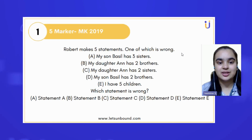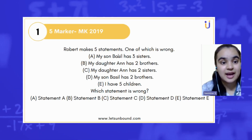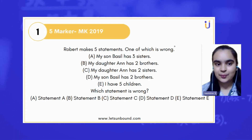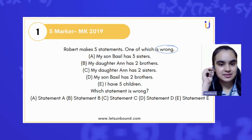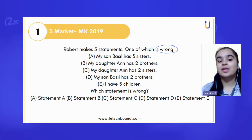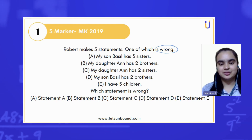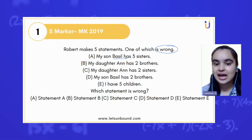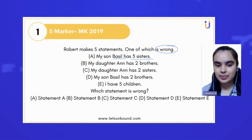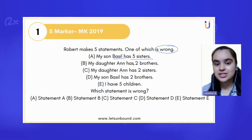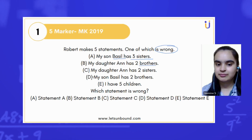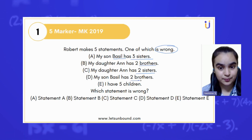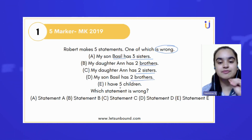Here is the question. Robert makes five statements, one of which is wrong. Let's look at the five statements. Statement one: my son Basil has three sisters. Statement two: my daughter Anne has two brothers. Statement three: my daughter Anne has two sisters. Statement four: my son Basil has two brothers. Statement five: I have five children.